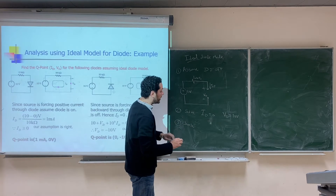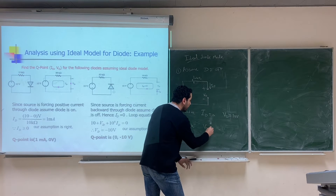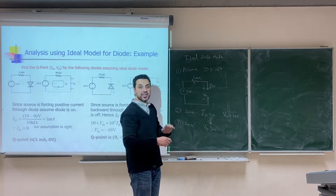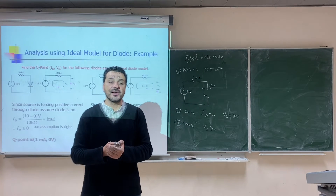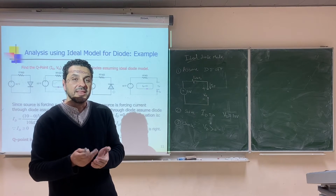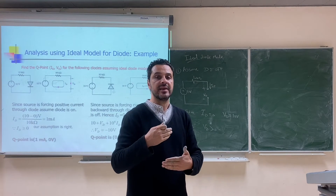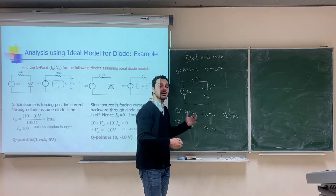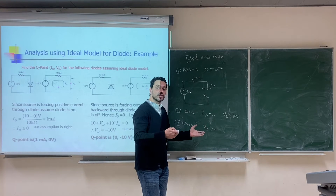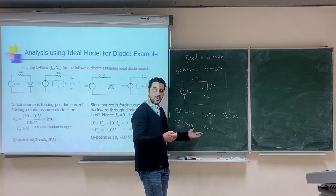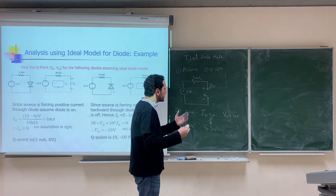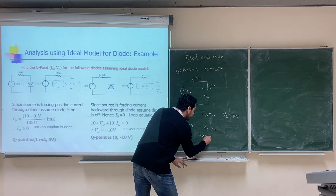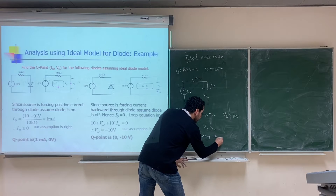We assumed the diode is off, but we found V_D = 10V, which is greater than zero. For an ideal diode assumed to be off, the voltage must be less than or equal to zero. Finding V_D > 0 while assuming the diode is off is impossible. Therefore, this is a wrong assumption.